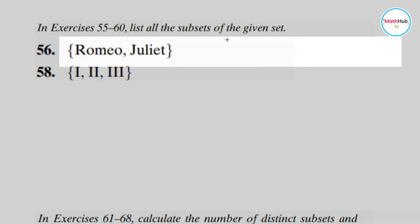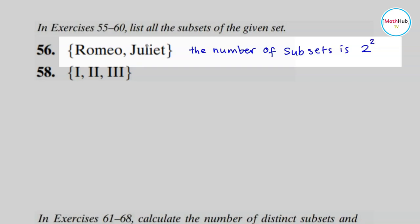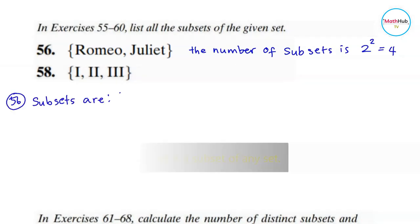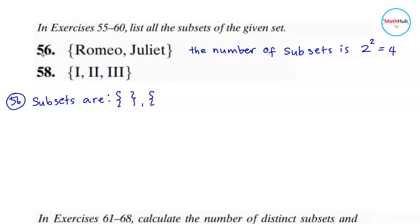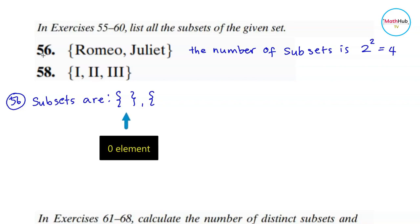For the next exercises, we want to list all subsets of a given set. The number of subsets is given by the formula 2^n, where n is the cardinality of the set. For number 56, the set has two elements, so the number of subsets is 2² = 4. We are looking for four subsets. Always start by writing the default subset, the empty set — that is one. Then the set containing just one element.